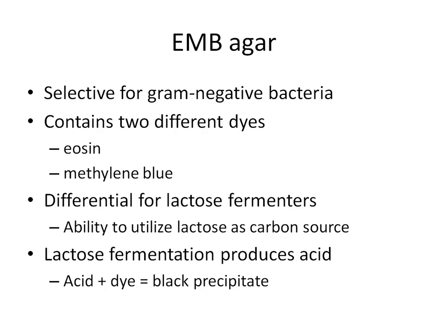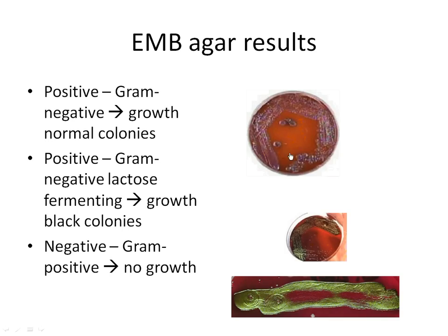Looking at the first EMB image: the EMB agar itself is a blood-red, almost purplish color. Bacteria is growing on this plate, so we know it must be gram-negative. In addition to growing, it shows a purplish-black color on the bacteria itself, which tells us that this bacterium is a lactose fermenter.